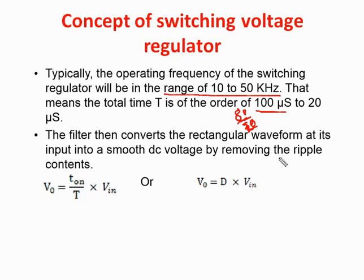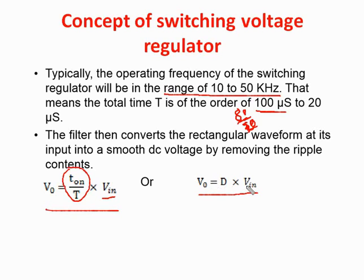The output voltage and input voltage relation is given by the equation: output voltage Vout equals duty cycle D multiplied by input voltage Vin. If we set the duty cycle at 50% (0.5), we get at the output side an average voltage of 25 volts from a 50-volt input.